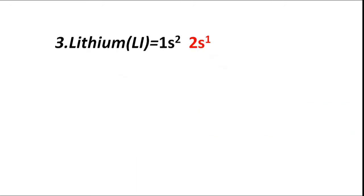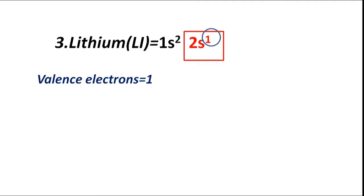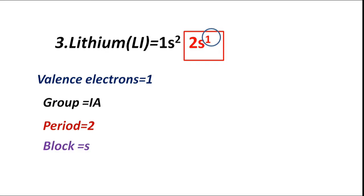Atomic number 3, lithium, has electronic configuration 1s2 2s1. The valence shell is L (second orbit). It has one electron, hence valence electrons equal to 1. Group IA, period 2. The outermost shell is second, therefore period 2. Block S — valence electrons fill the s sub-shell. Valency is 1.